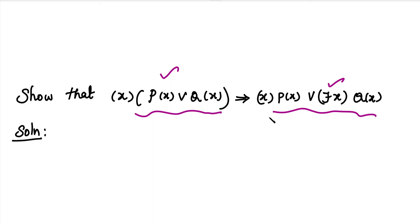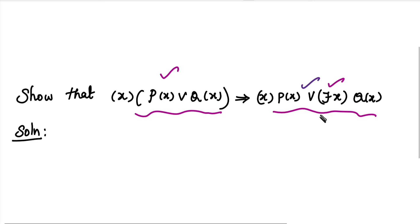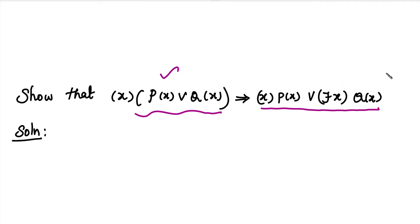Let's prove it using the indirect method. What we do is assume, and then we do a contradiction. So we have a conclusion — we assume that we have a conclusion. What we do is show the statement is true. How we prove it: this statement is true, but in the indirect method, we assume that this statement is true and this statement is false — that is, this negation is true.